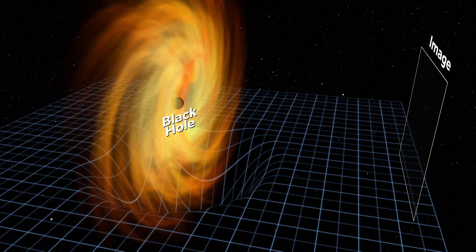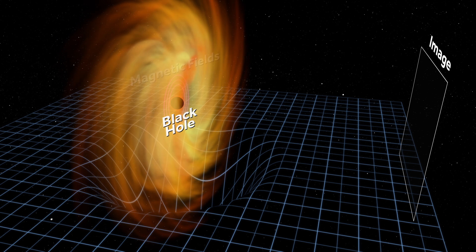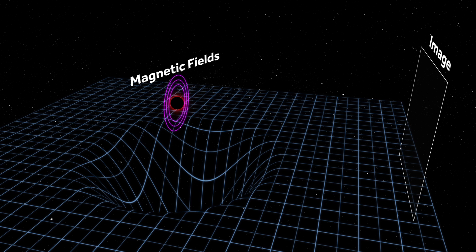The plasma surrounding a black hole has magnetic fields threaded throughout. If the magnetic fields are weak, the plasma drags them into a circular pattern.